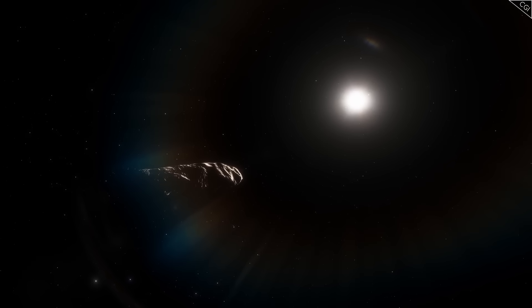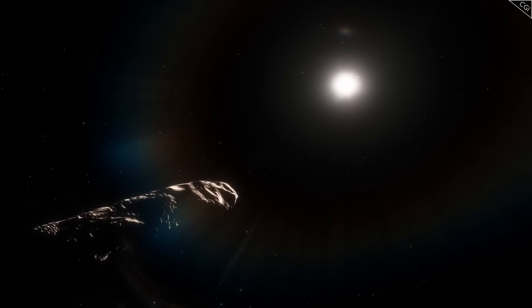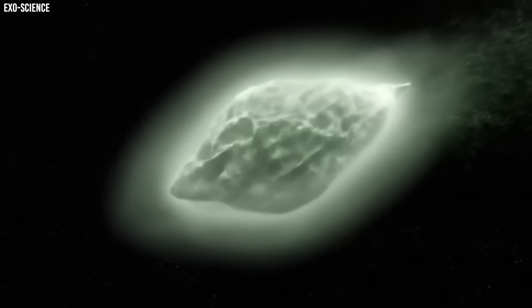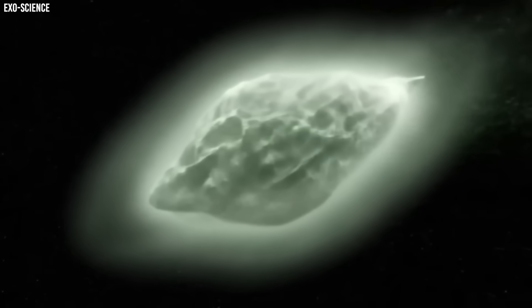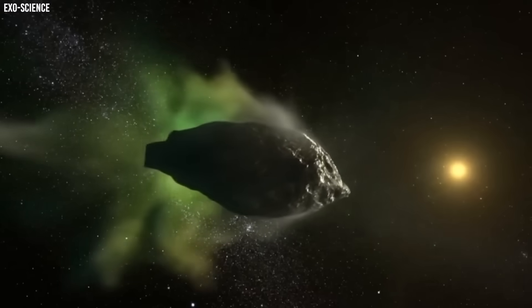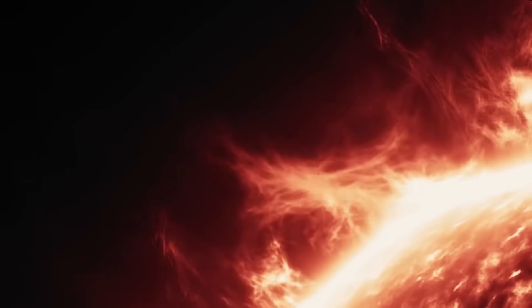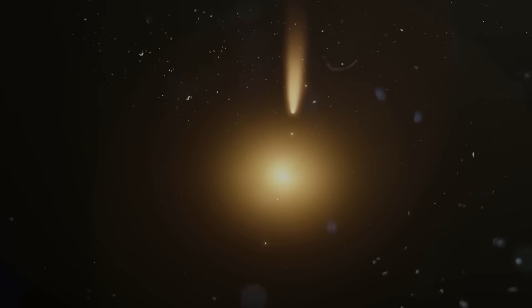To understand how absurd this is, the Virtual Telescope Project released a side-by-side comparison between 3i Atlas and Comet Lemon, a completely ordinary comet photographed under identical conditions just days earlier. Lemon behaved as expected, a radiant, ghostly tail streaming away from the sun, perfectly shaped by solar radiation. But Atlas? It was still just a dot.